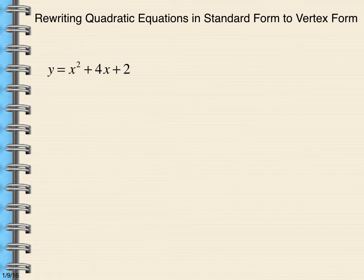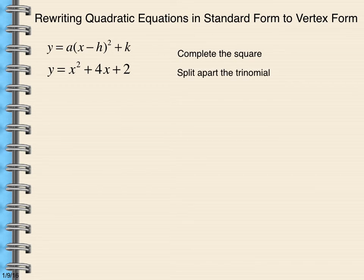In the next example, we have an equation which is in standard form. What we want to do is get practice writing it in vertex form, because that will be the easiest way to graph a quadratic equation. Remember that vertex form looks like this. In order to turn this standard form equation into vertex form, we're going to need to complete the square. Recall how we do that is we split apart the trinomial.